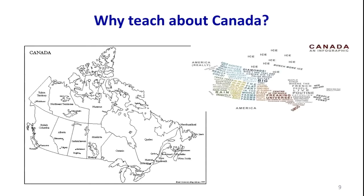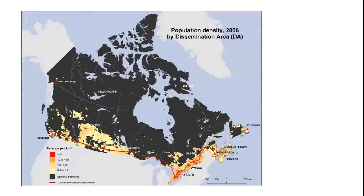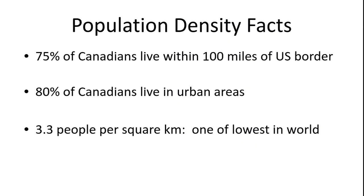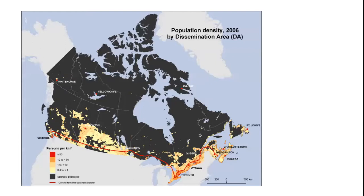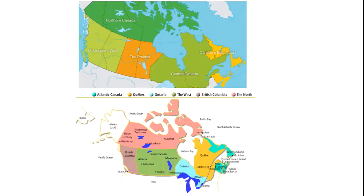A very common map shown in Canadian studies is the population density map. Seventy-five percent of Canadians live within 100 miles of the U.S. border, 80% live in urban areas, and population density is one of the lowest in the world at 3.3 people per square kilometer. The urbanization of Canada is a key difference between the U.S. and Canada.